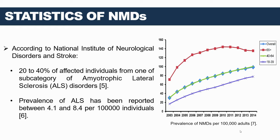Let's discuss some compelling statistics regarding neuromuscular diseases as provided by the National Institute of Neurological Disorders and Stroke. It is important to note that 20–40% of affected individuals fall into one of the subcategories of ALS, highlighting the significant diversity within the ALS spectrum. Additionally, the prevalence rate of ALS has been reported to range between 4.1 and 8.4 cases per 100,000 individuals, underscoring the importance of early detection and effective diagnostic methods for NMDs.